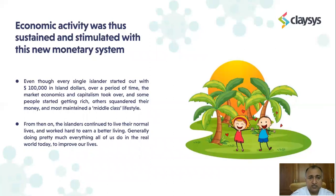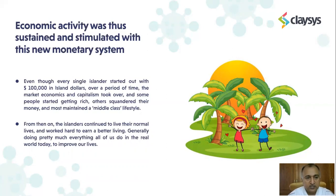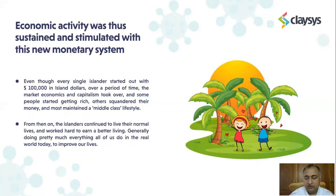With this, economic activity was sustained and stimulated for the island. Even though every islander started with $100,000 in island dollars, over time market economics and capitalism took over — some people started getting rich, others squandered or lost their money, and most maintained a middle-class lifestyle. The islanders continued to live normal lives and worked hard to earn a better living, doing pretty much everything all of us do in the real world today. This became the new normal after they addressed the crisis in the year 2000, and life became very normal, just like we are used to in the real world today.